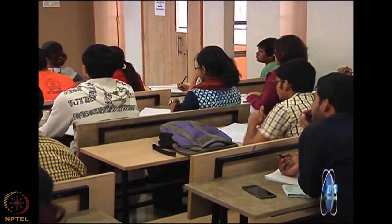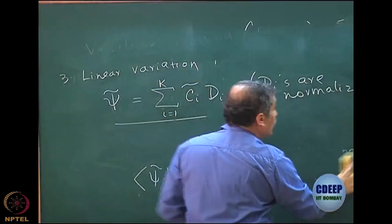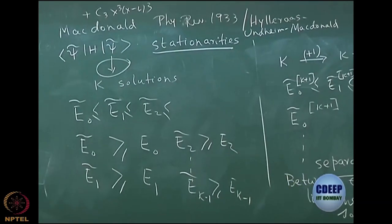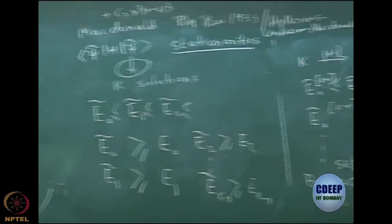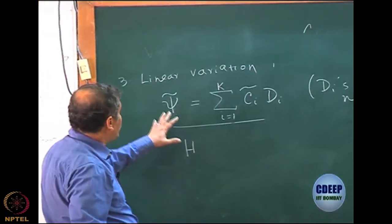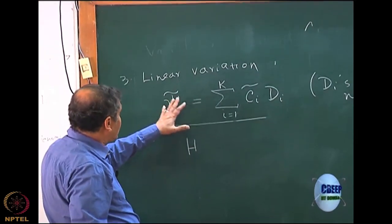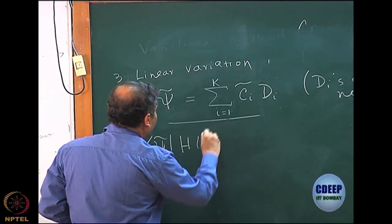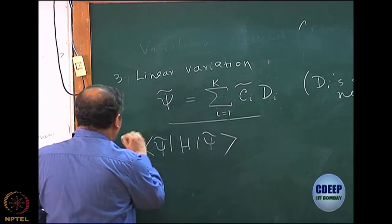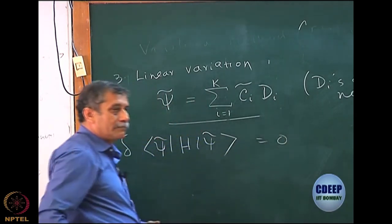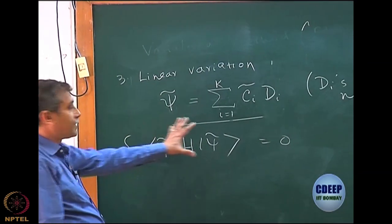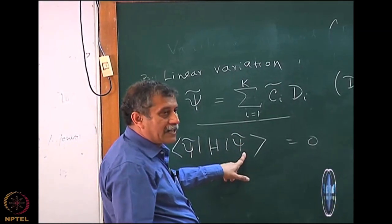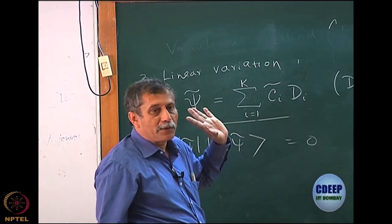So I come back to linear variation very quickly and tell you now how to get the solutions. Basically, what we want to do is find out the average value of psi tilde H psi tilde such that the first order change is equal to 0. That is basically the content of the variation method. I must put psi tilde on both sides and make the first order change equal to 0. To do that, I must ensure that the d_i's are normalized.